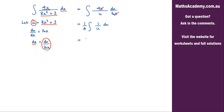What we get is one quarter log of u, and we must remember to add on that constant of integration. The final step is just to substitute back in for u. And we know that u is 8x squared plus 3, so we get one quarter log of 8x squared plus 3, and just add on the constant of integration.